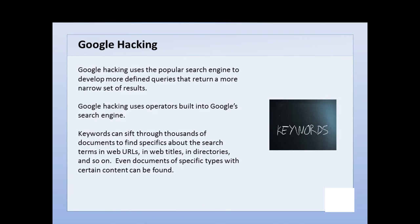These keywords and operators can help you sift through thousands of documents to find very specific information about the search term you're looking for. These operators will help you look in web URLs themselves, in website titles, help you find directories, sensitive information, and so forth. You can even find particular documents — like find all PDFs on a site or find all Word docs on a site, for example.